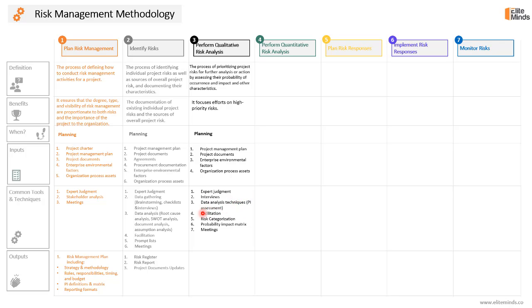Additional tools for qualitative risk analysis include facilitation for conducting interviews and sessions, risk categorization, and the probability and impact matrix — the most important tool to prioritize project risks — in addition to meetings. As an outcome of this process, project documents will be updated including the risk register, risk report, assumption log, and issue log. The key outputs of the remaining risk management processes will be updates to the risk register and the risk report.